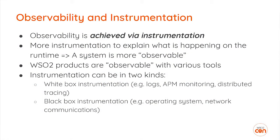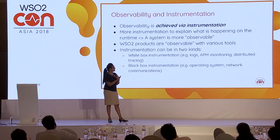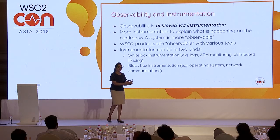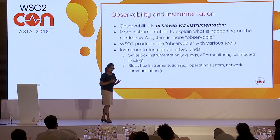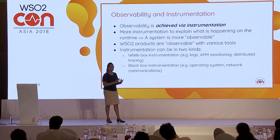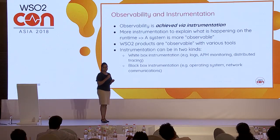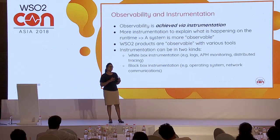Observability is provided through instrumentation. With the human body, it is by default observable — it's transparent to a certain extent for us to take tests and understand our body. But as developers and engineering people, we have to develop our systems to be observable. Then only we can find problems or do troubleshooting. Observability is achieved by instrumentation — the more instrumentation we provide to our internal system, the more observable the system becomes.